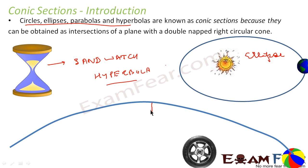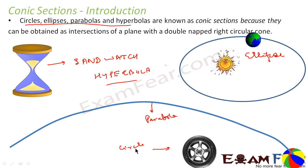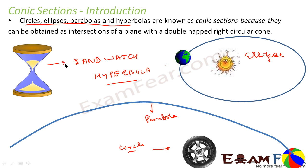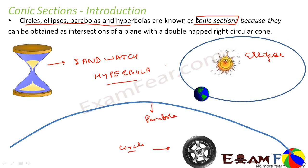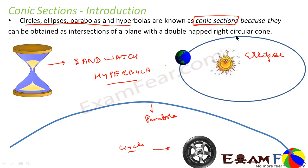These are all called conic sections because a cone is involved — specifically, a right circular cone. They are called conic sections and not 'ABC sections' or 'circular sections' because a right circular cone is used to derive them, as I will explain in the next slides.